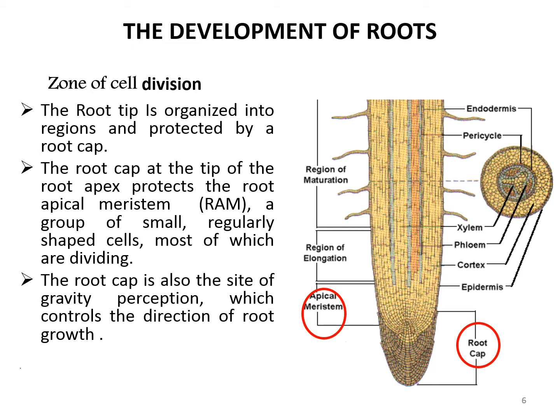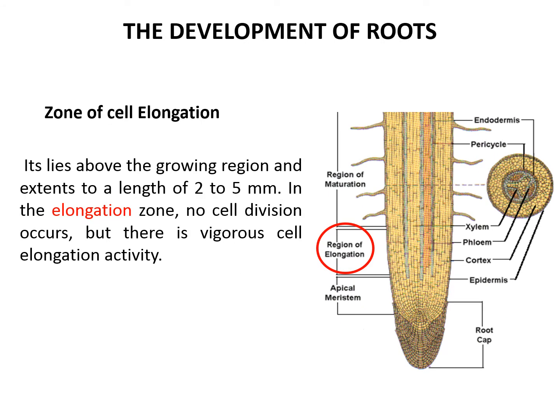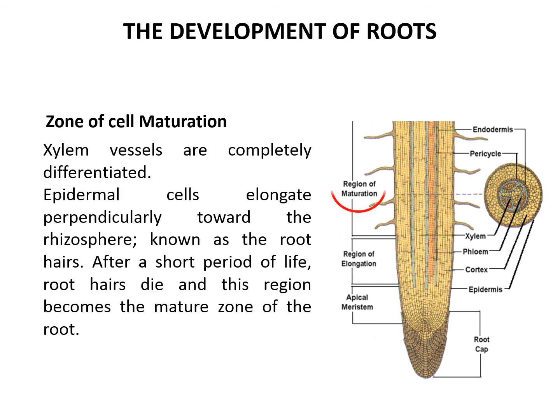The root apical meristem is a group of small, regularly-shaped cells, most of which are dividing. The root cap is also the site of gravity perception, which controls the direction of root growth. Next is the zone of cell elongation, which lies above the zone of cell division. In the elongation zone, no cell division occurs, but there is rigorous cell elongation activity. The next section is the maturation zone, where xylem vessels are completely differentiated. Some epidermal cells elongate perpendicularly toward the rhizosphere — these cells are known as root hairs. After a short period of life, root hairs die, and this region becomes the mature zone of the root.